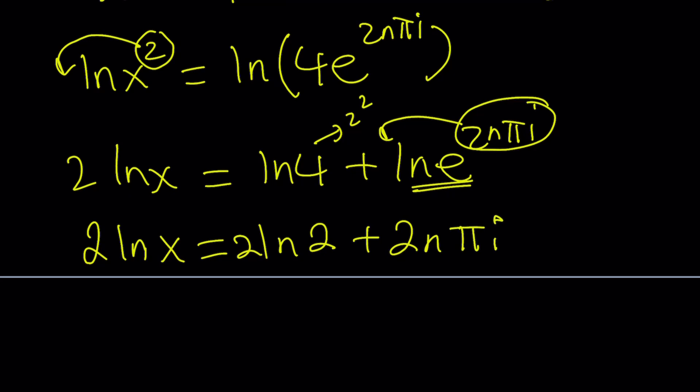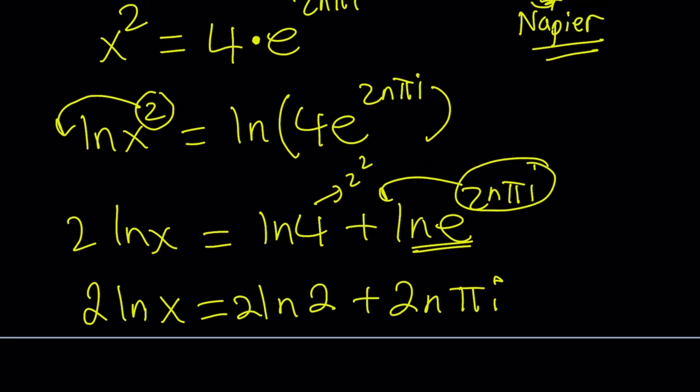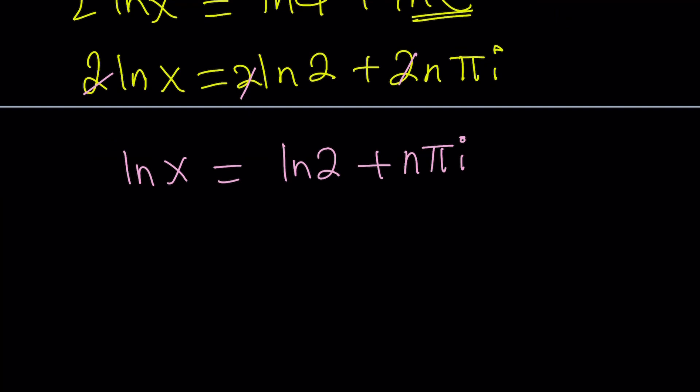So far, so good. So we were able to write our number in polar form. And then we were able to ln both sides and then bring down the exponents. Now we have something that we can easily work with. Now, divide everything by 2 because notice that we can just get rid of them. So this gives us ln x equals ln 2 plus n pi i. n is an integer. Remember that. Multiples of pi multiplied by i is going to give us what we want.